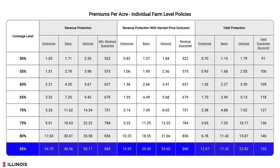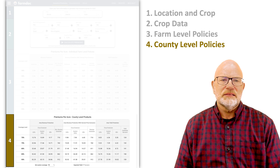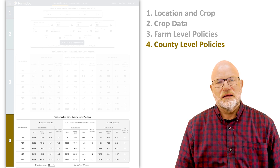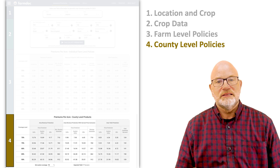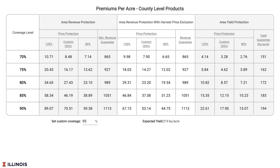Revenue protection, shown on the left side of the screen, is the most commonly used product. Revenue protection with harvest price exclusion is similar but does not allow the harvest price to increase. We will link to descriptions of the products in the video below. Yield protection is a yield-based product. We also give premiums for county level policies, which follow the same terminology as farm level policies but pay based on county level yields and revenue rather than farm level. These include area revenue protection, area revenue protection with harvest price exclusion, and area yield protection.